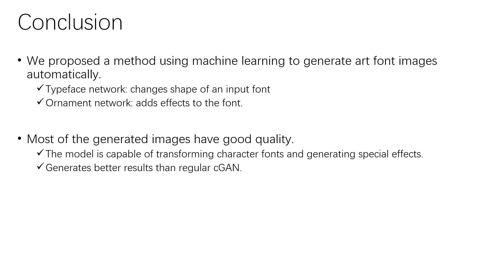That brings me to the end of my presentation. I've talked about our proposed method using machine learning to generate art font images automatically. We used two networks to achieve this task: the Typeface Network to change the shape of an input font, and the Ornament Network to add effects to the font. Most of the generated images have good quality. The results show that the proposed model is capable of transforming character fonts and generating special effects, and the generation is better than a regular CGAN. Thank you for listening.